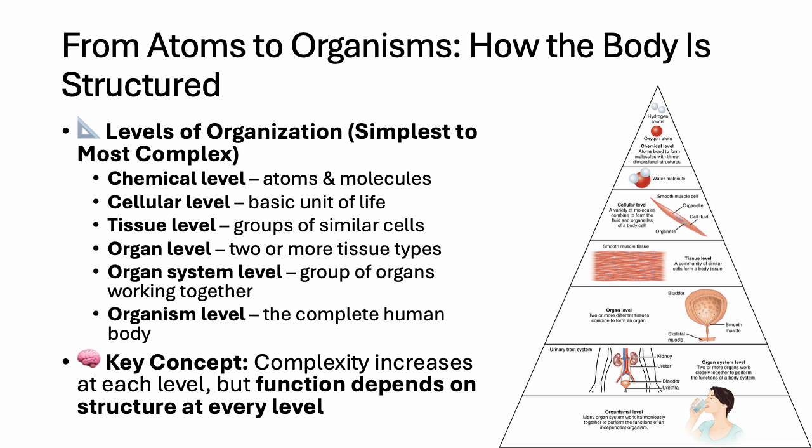Before we dive into individual systems, it's important to understand how the body is organized — from the smallest particles to the complete person. This is known as the levels of structural organization, and it gives you the framework for understanding anatomy in layers. We start with the chemical level, the foundation of all matter. Atoms like hydrogen, oxygen, or calcium combine to form molecules such as proteins, sugars, and DNA — the raw ingredients for life. Next, at the cellular level, molecules form organelles and cells, the smallest independently functioning units of life. Each cell has a specialized role.